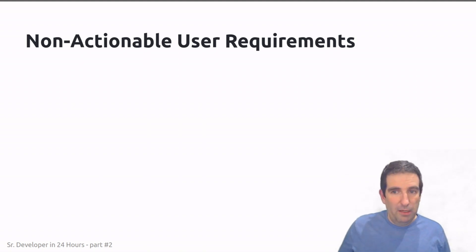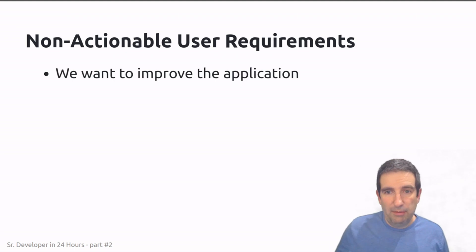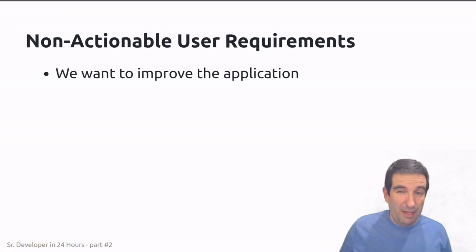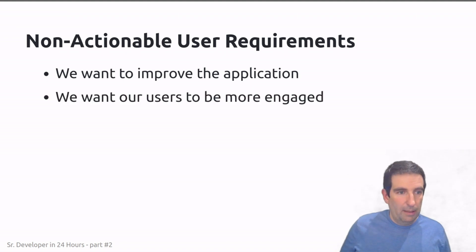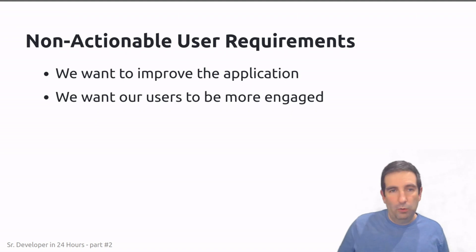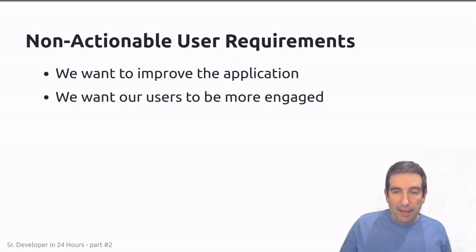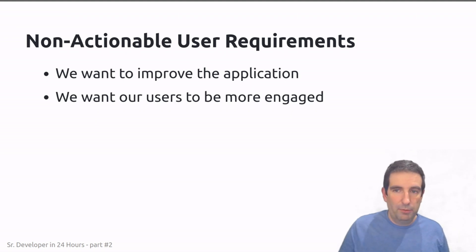A lot of times we get user requirements that are not actionable, and these are extremely problematic. Sometimes a requirement might say 'we want to improve the application' — but what does that mean? Or 'we want our users to be more engaged' — what is currently engaging users, and what can we do more of? Those are things we have to answer to turn vague, non-actionable requirements into something more actionable.